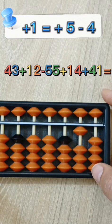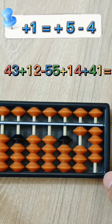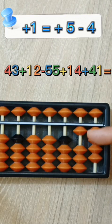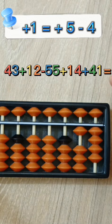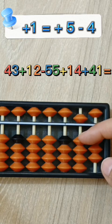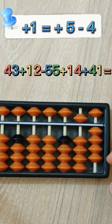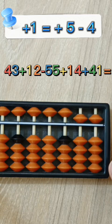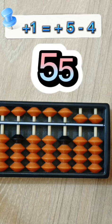5 minus 4. And here, I need to put 4 in the tens place. How can I put 4 when I don't have enough beads? Use the rule of plus 4. It's plus 5 minus 1. And here, I should add 1. From where? Use the rule. 5 minus 4. The answer is 55.